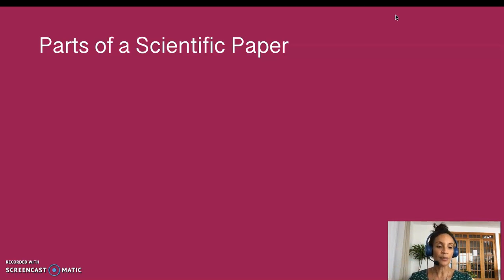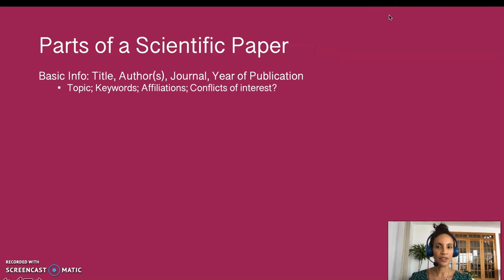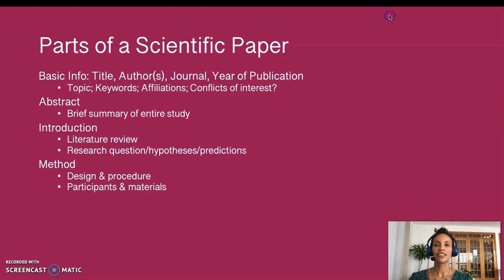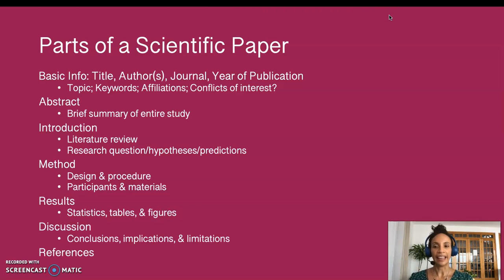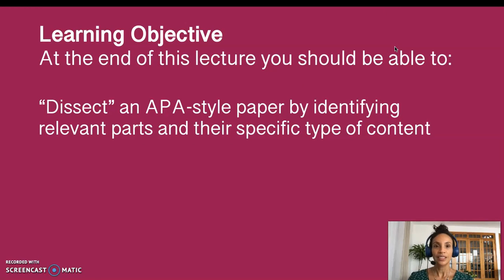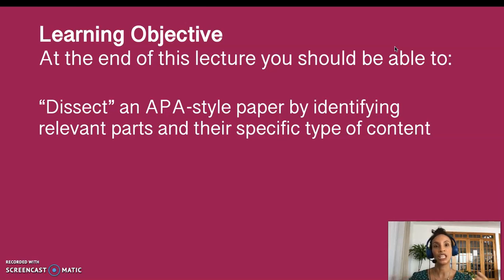In sum, the anatomical parts of a scientific paper are: the basic information provided, the abstract, the introduction, the method, the results, the discussion, and the references. Now that we are at the end of this mini-lecture, the hope is that you have reached the objective — to be able to dissect an APA-style paper by identifying the relevant parts of the paper and their specific type of content. I will catch you on the next mini-lecture.